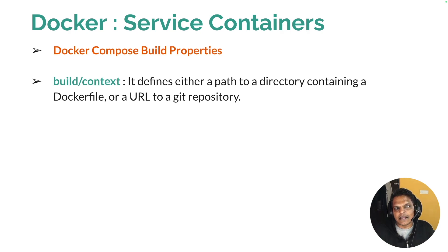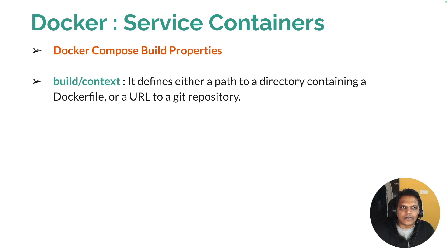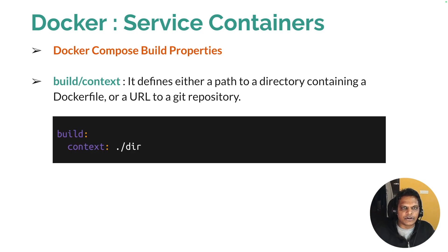The build or context defines either the path of the directory containing the Dockerfile, or the URL of a Git repository. The Dockerfile must be present on the machine whether you are building from a docker command or from Docker Compose. With Docker Compose you can use the build context to define either the local path where your Dockerfile is present, or the git location where the Dockerfile is committed. Make sure the git location you define is public, because Docker Compose will not ask for git credentials at the time of execution.